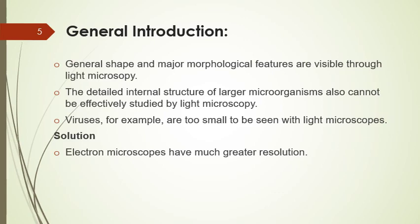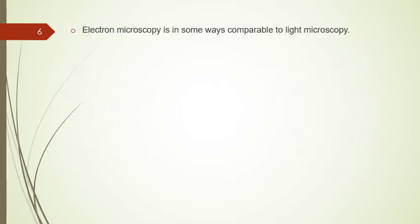The detail internal structure of larger microorganisms also cannot be effectively studied by light microscopy. There are various limitations that arise from the nature of visible light waves, not from any inadequacy of the light microscope itself. So the electron microscope has a much greater impact. The electron microscope simply uses electromagnetic lenses, electrons, and a fluorescent screen to produce the magnified image.